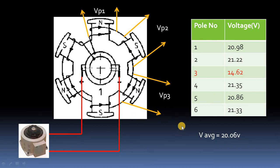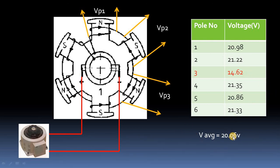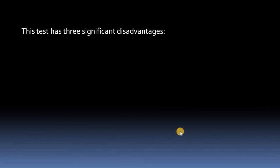For accuracy, we can calculate the deviation from the average value. If the deviation is greater than five percent, that pole has shorted turns. Deviation is calculated as the actual value minus the average value.